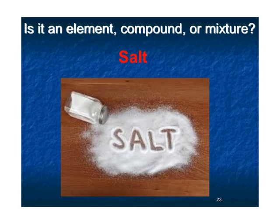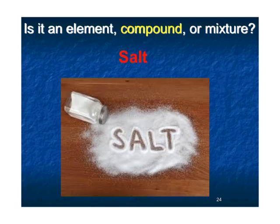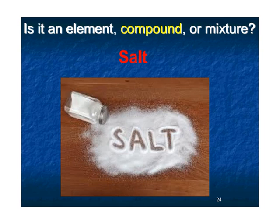Is salt an element, compound, or mixture? Salt is a compound. It's made of sodium and chlorine, and it creates salt. Amazingly, sodium is a soft gray metal and chlorine is a green poisonous gas, but when they ionically bond together, they form a totally new substance that I can't separate back into sodium and chlorine without doing it in a really hard chemical way. So it forms salt — NaCl — that's a compound.